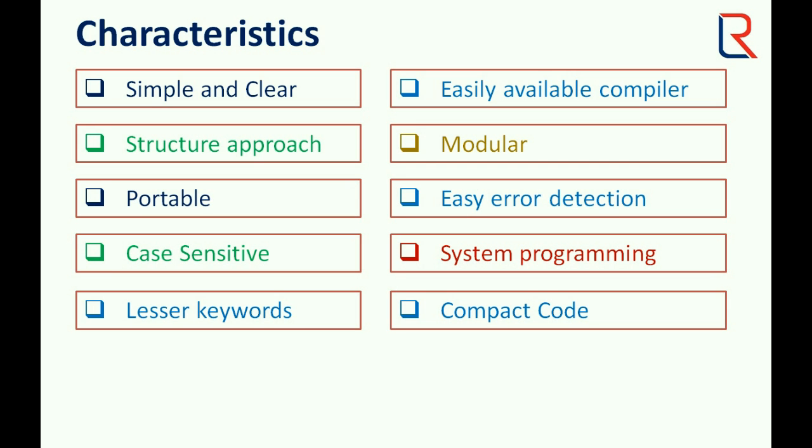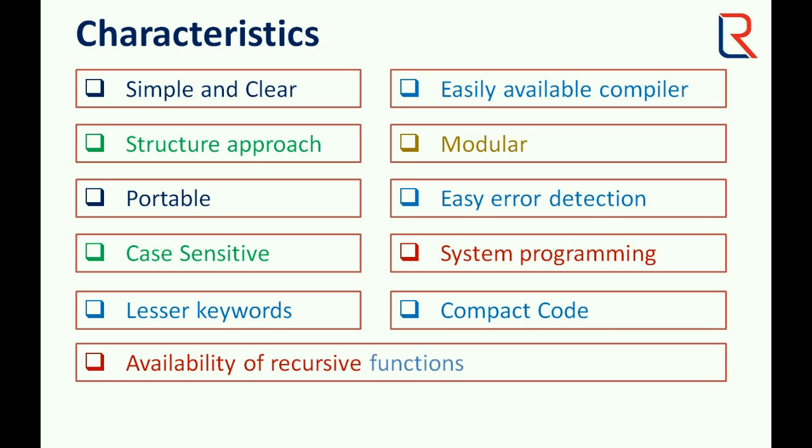Compact code. C code can be compact with the help of some shorthand operators like increment operator, decrement operator and others. Availability of recursive function.